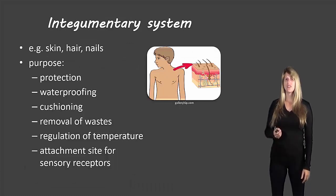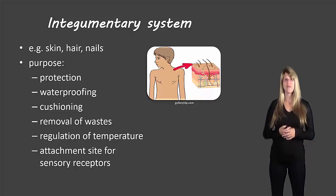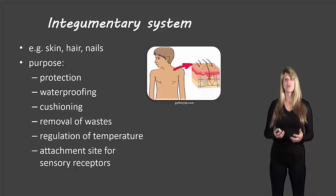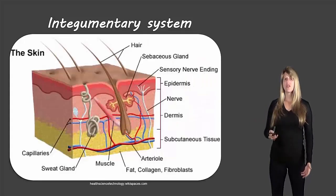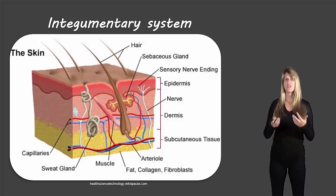The next system is the integumentary system — one of the harder ones to pronounce. Some call it the skin system, but it includes more than just skin: hair, nails, and glands are all part of it. Its purposes include protection, waterproofing, cushioning, removal of waste, regulation of temperature, and providing attachment sites for sensory receptors. A close-up view shows the skin has several layers — the hypodermis, dermis, and epidermis — containing hair, glands, and blood vessels. It's actually a very complex system.